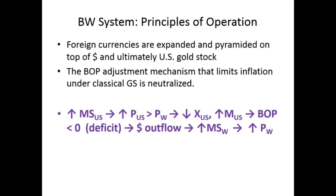The balance of payments mechanism didn't work under the Bretton Woods system — that was the key. If the U.S. now increased the money supply, U.S. prices would go up above world prices, our exports would go down, we'd get a balance of payments deficit — but gold wouldn't flow out of the country; dollars would. When these dollars flowed to other countries, their central banks bought them by printing their own money. So we caused world inflation — this system caused world inflation.